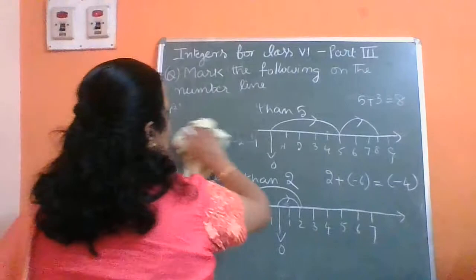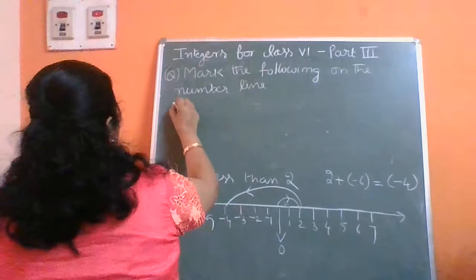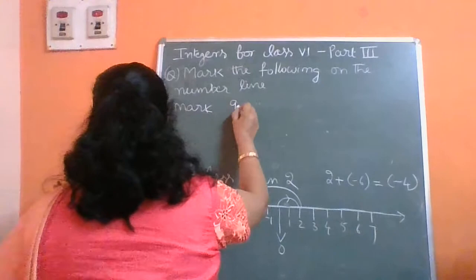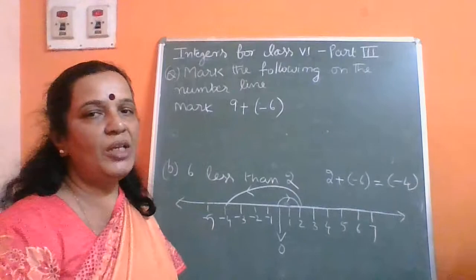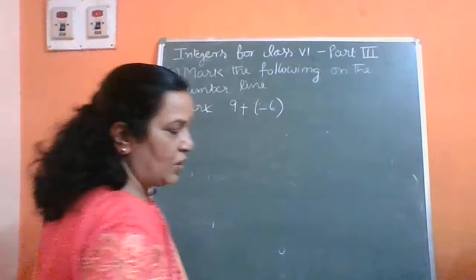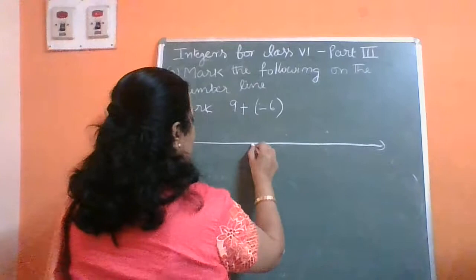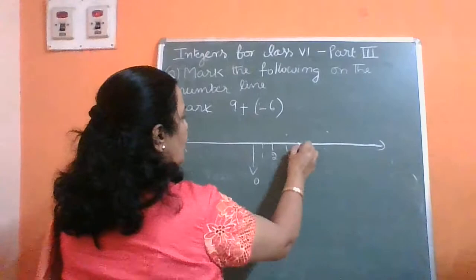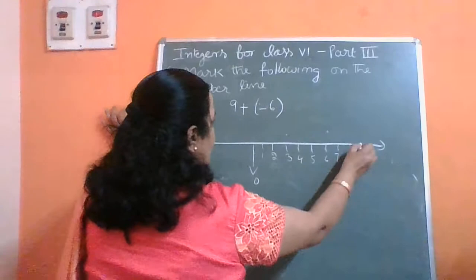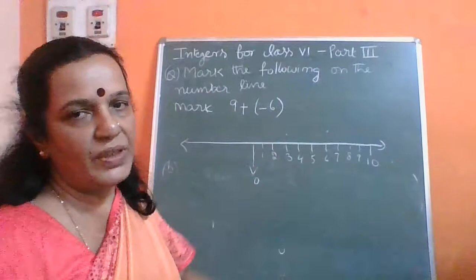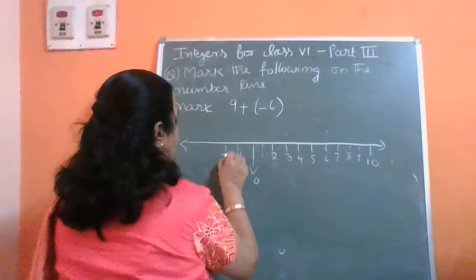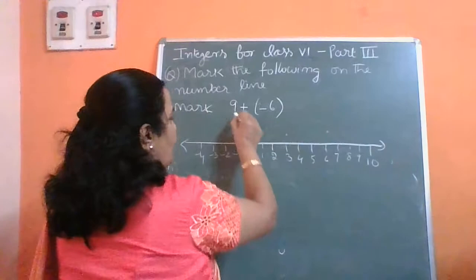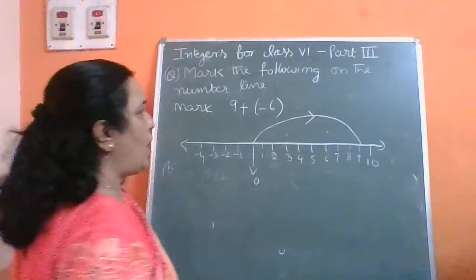Now we are going to mark one more integer on the number line: 9 plus minus 6. You draw a number line marking 0, 1, 2, 3, 4, 5, 6, 7, 8, 9, 10 on the right side — you need more numbers towards the right because 9 is given — and 3, 4 on the left is enough. First, you have to go to 9, from 0 to 9.